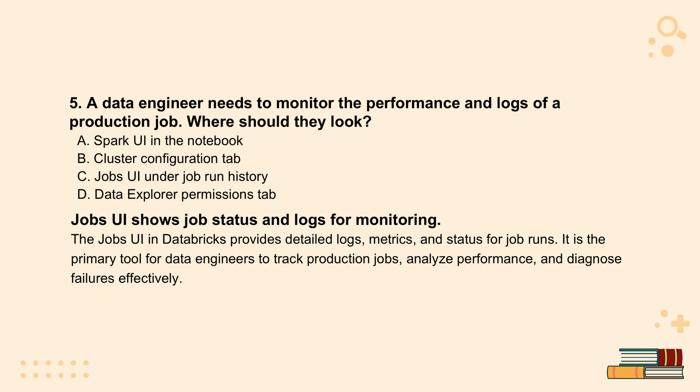One more area — operations. Once your job is actually running in production, how do you keep an eye on it? Monitoring is critical. Where do you go to check performance, see logs, debug if things go wrong? The source has a question pointing you right to the answer in the UI. That answer is the Jobs UI, specifically under the job run history. That's where you find detailed logs, performance metrics, everything for each run of your job. Engineers need that Jobs UI to see if jobs passed or failed, how long they took, check standard output, standard error — and even links to the Spark UI for deeper dives into performance. The exam basically says: need to monitor your jobs, go to the Jobs UI run history — that's your window.